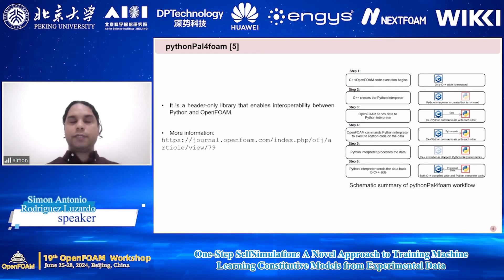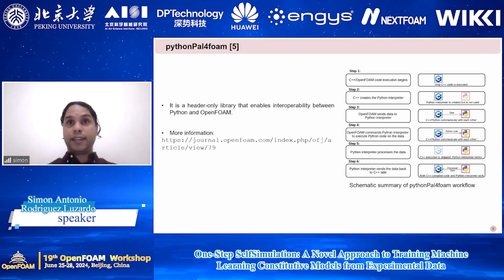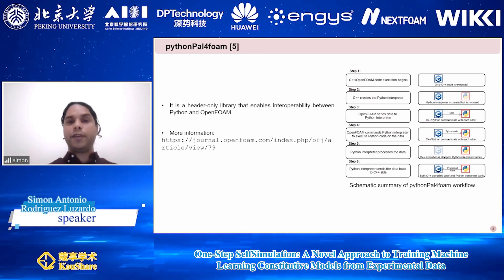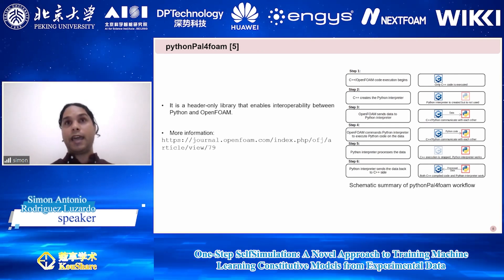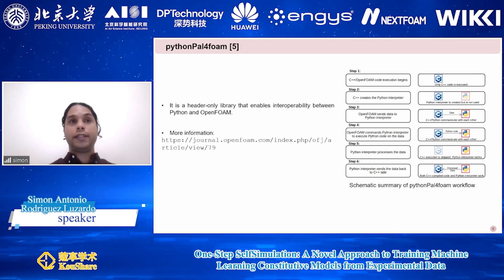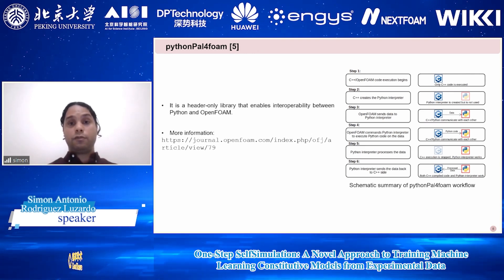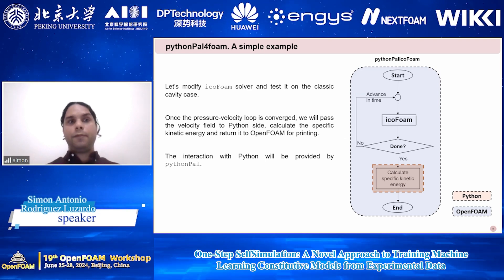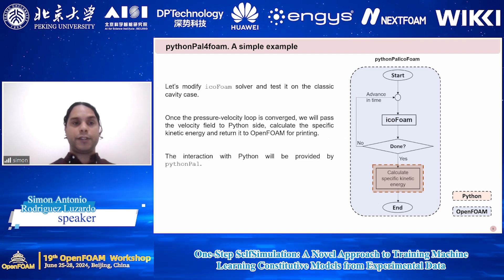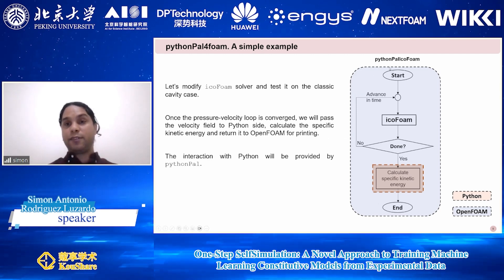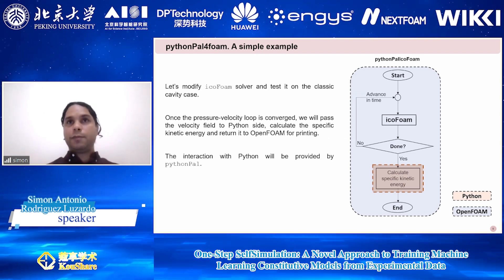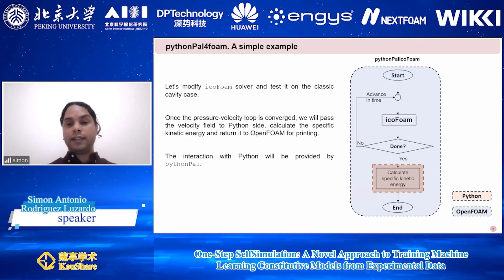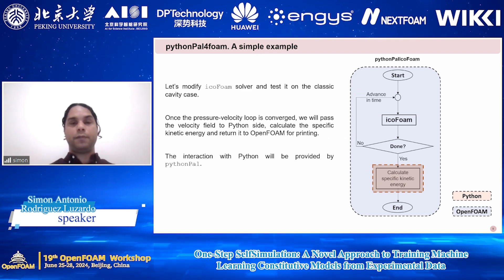Whenever we need to operate on OpenFOAM data, we use this library to transfer it to the Python interpreter, execute the required Python code, and retrieve the result back to the OpenFOAM side — all with no extra computing time. As an example, we created PythonPalIcoFoam by modifying IcoFoam so that once the simulation is completed, the velocity field is passed to Python, the specific kinetic energy is calculated there, and the result is retrieved back to OpenFOAM where it is printed.